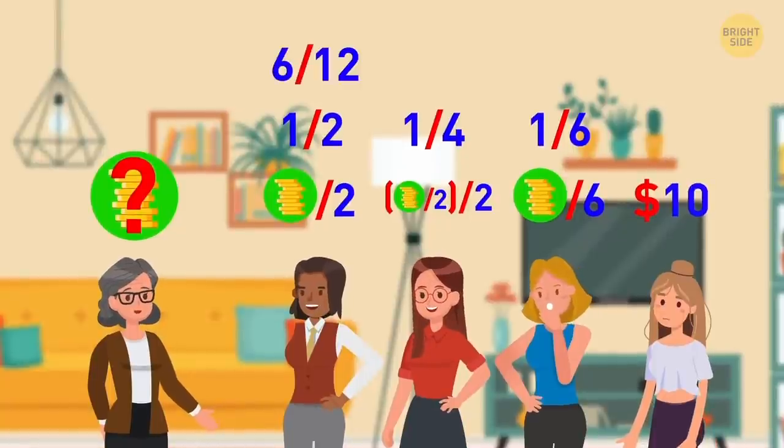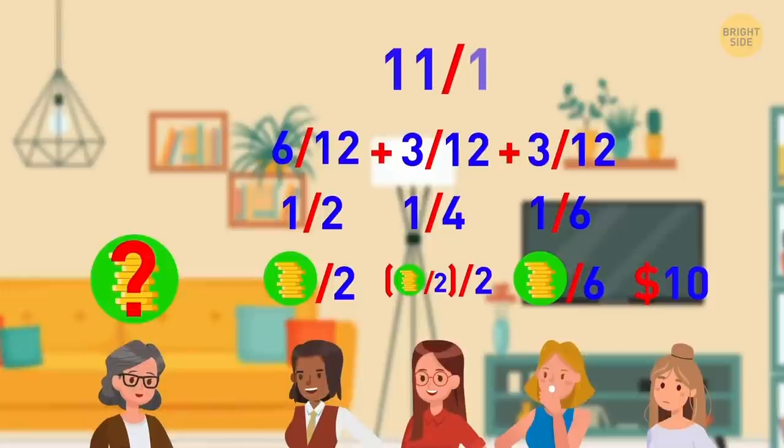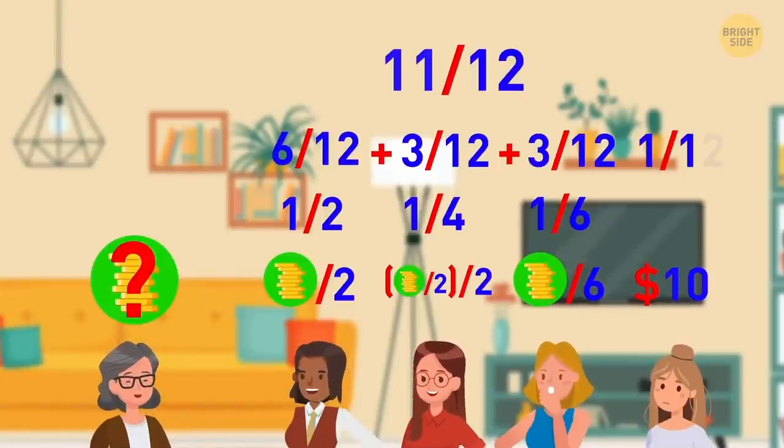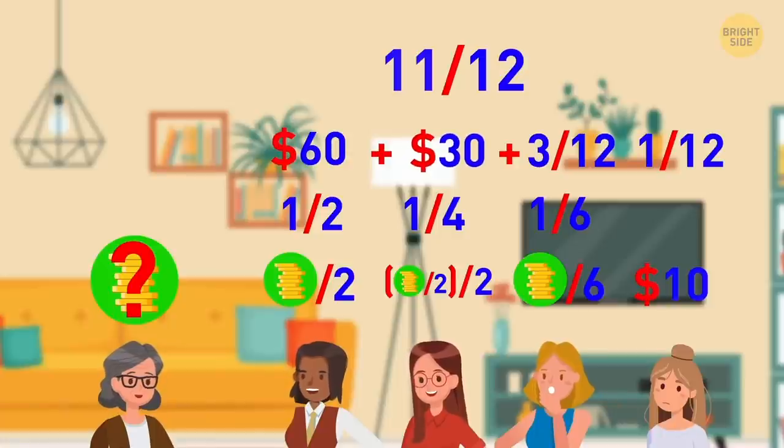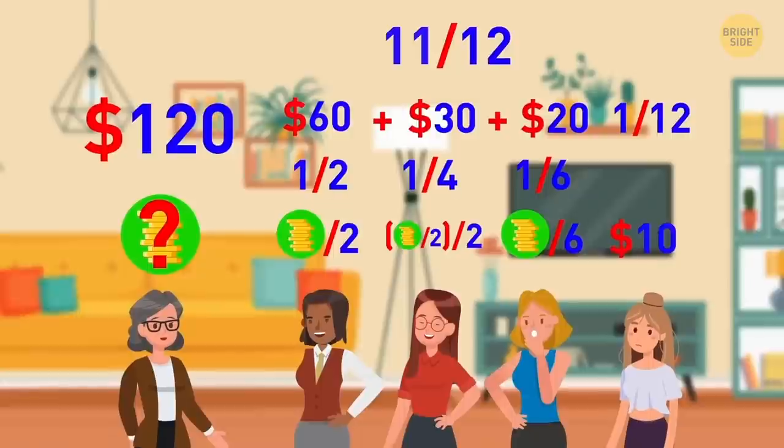So, Ella gets six twelves. Ashley gets three twelves. And Eleanor gets three twelves. Together, it's eleven twelves, which means that Sierra gets one-twelfth, which is ten bucks. So, Stella gets sixty dollars. Ashley gets thirty dollars. Eleanor gets twenty dollars. And the whole sum is one hundred twenty dollars. Hey, if I were Sierra, I would complain.